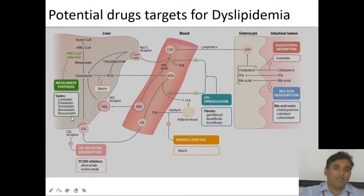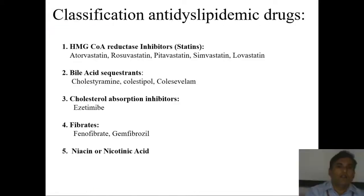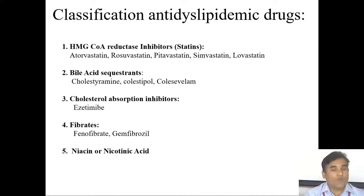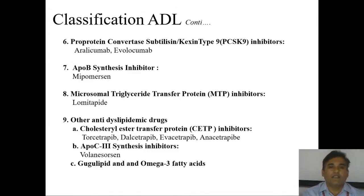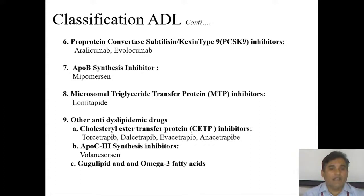When discussing individual drugs, the major drug class is HMG-CoA reductase inhibitors, which are the most commonly used — atorvastatin, rosuvastatin, pitavastatin, simvastatin, and lovastatin. Bile acid sequestrants include cholestyramine and colestipol. Cholesterol absorption inhibitor is ezetimibe. Fibrates include fenofibrate and gemfibrozil. Nicotinic acid (niacin) is a vitamin. PCSK9 inhibitors include the antibodies alirocumab and evolocumab. ApoB synthesis inhibitor is mipomersen. MTP inhibitor is lomitapide. Other drugs include CETP inhibitors, ApoC3 inhibitors, gugulipid, and omega-3 fatty acids.